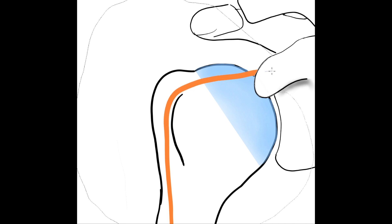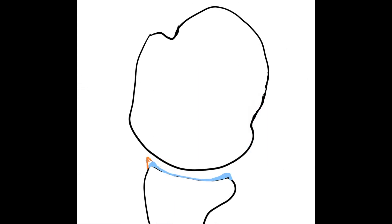The tendon of the long head of the biceps enters the glenohumeral joint through the bicipital groove and inserts into the supraglenoid tubercle. This tendon continues anteriorly and posteriorly all the way around the rim of the glenoid fossa, forming the glenoid labrum. In a transverse view, we can see that the labrum is a fibrocartilaginous structure that makes the glenoid fossa deeper and increases the contact surface for the head of the humerus.